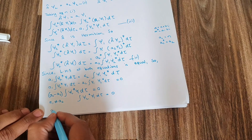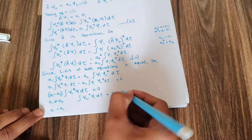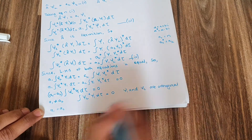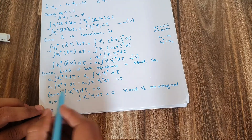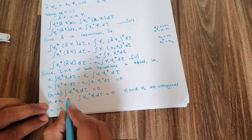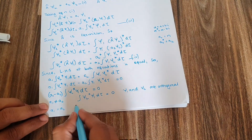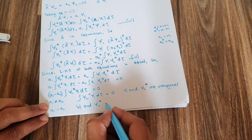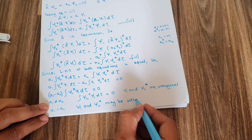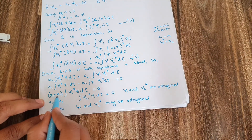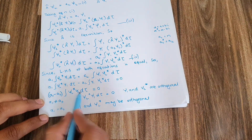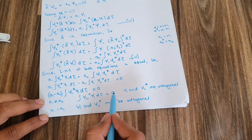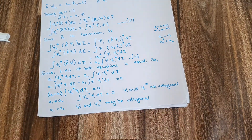When a₁ is not equal to a₂, ψ₁ and ψ₂ are orthogonal. However, in the case when a₁ equals a₂ — the degenerate case — then (a₁ − a₂) becomes zero, and this part of the equation may or may not be zero. So we cannot definitively say whether ψ₁ and ψ₂ are orthogonal. They may be orthogonal, but it is not guaranteed. That concludes today's video — see you in the next one, inshallah.